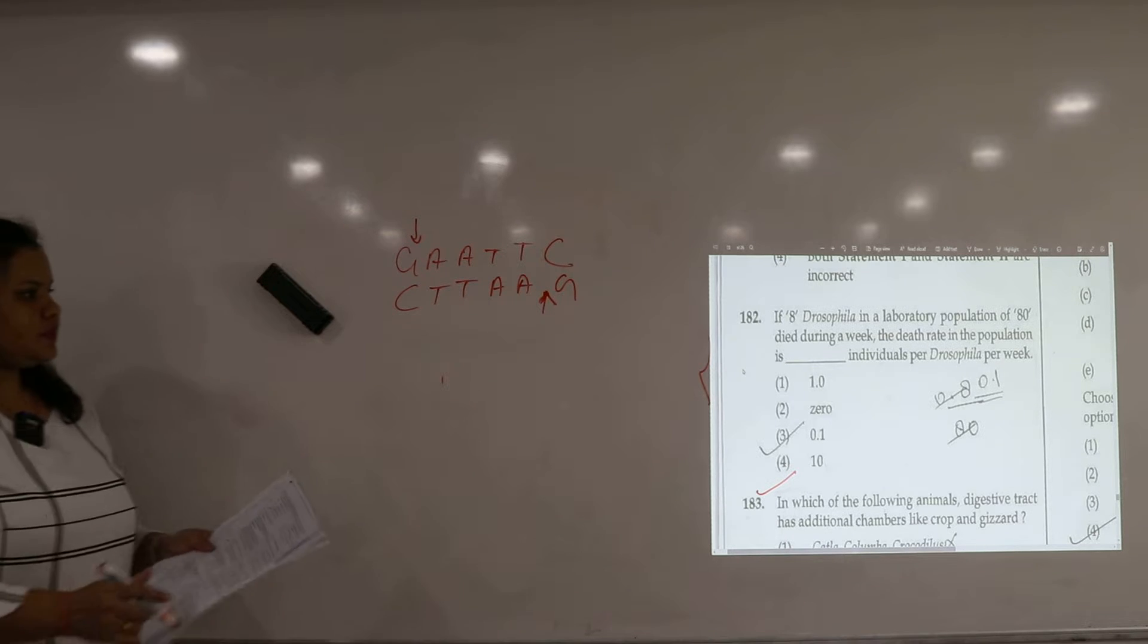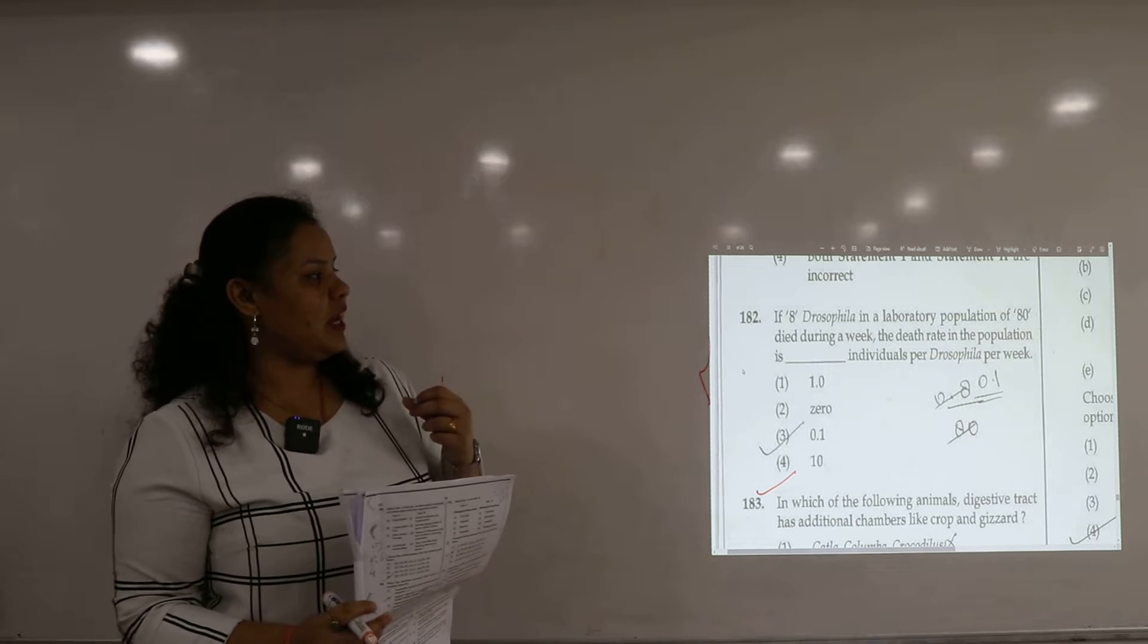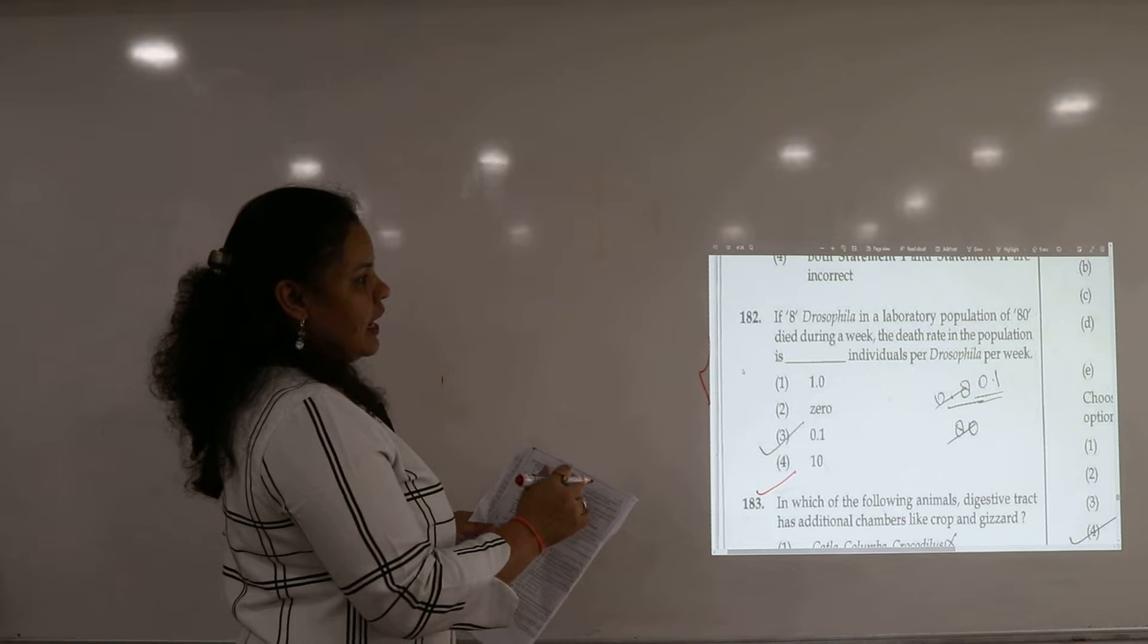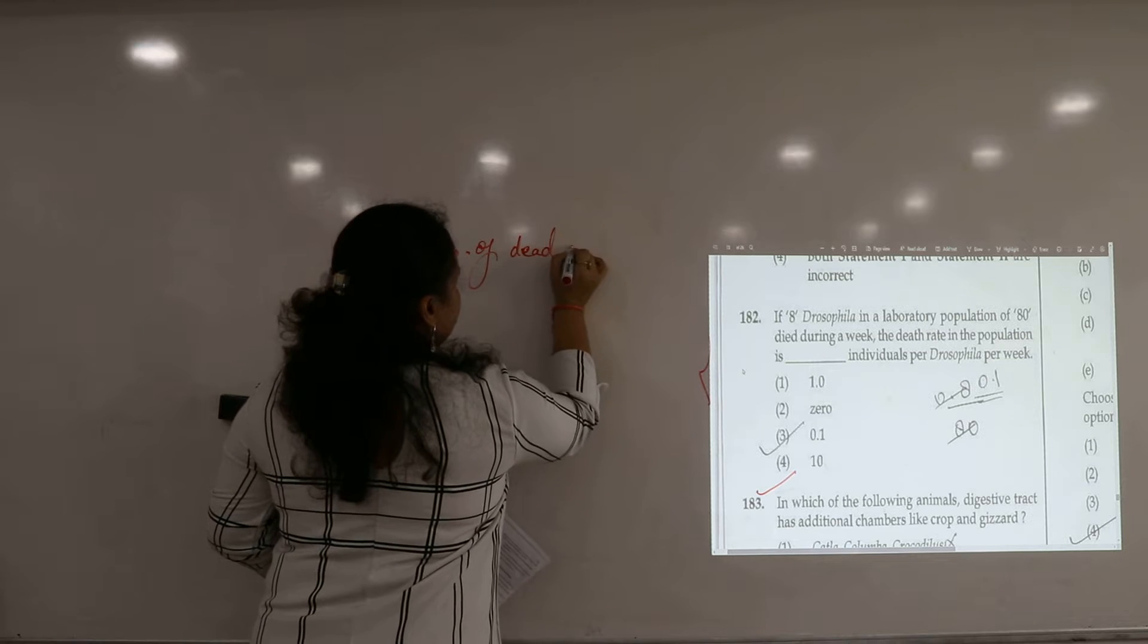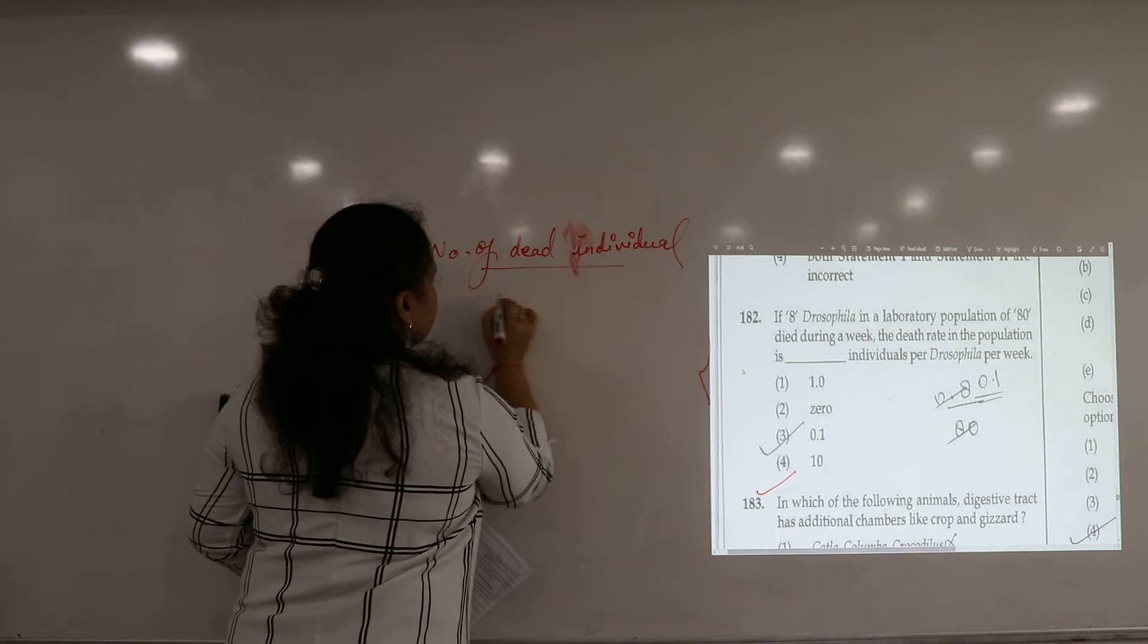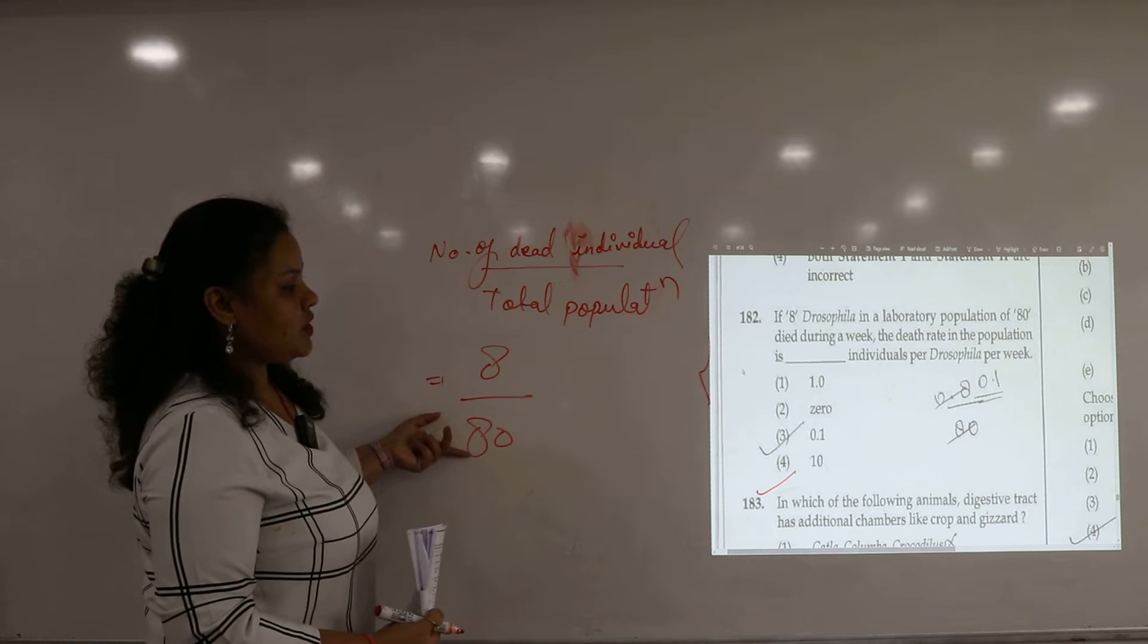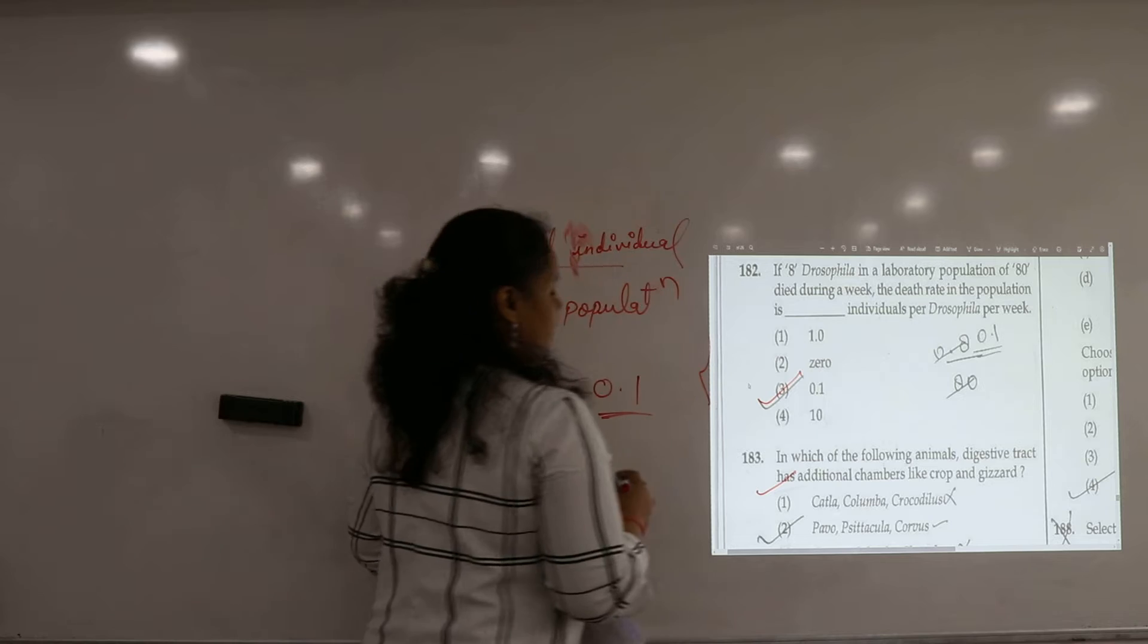Next question, question number 182. If 8 drosophila in a laboratory population of 80 died during a week, the death rate in the population is calculated as number of dead drosophila divided by their total population. So 8 divided by 80, so answer for this question will be 0.1. So right answer is answer number three.